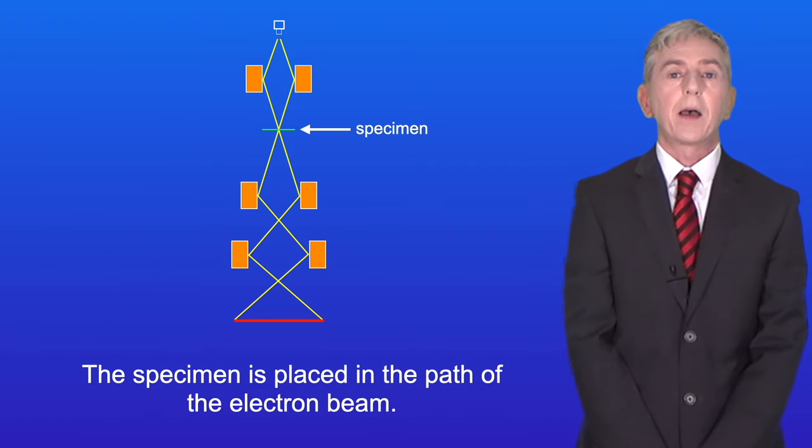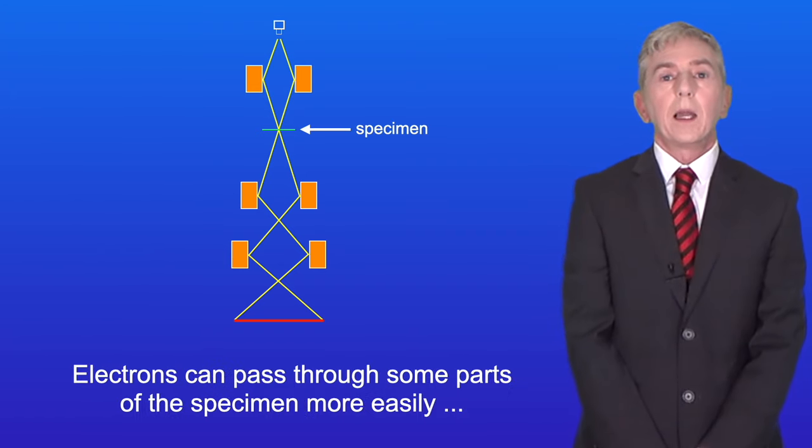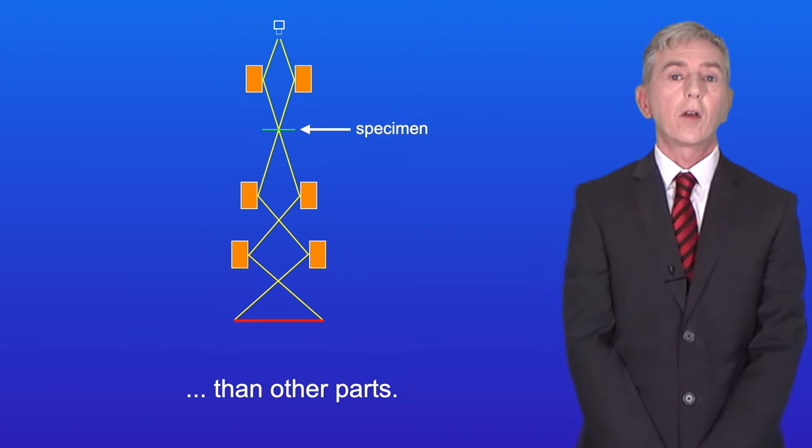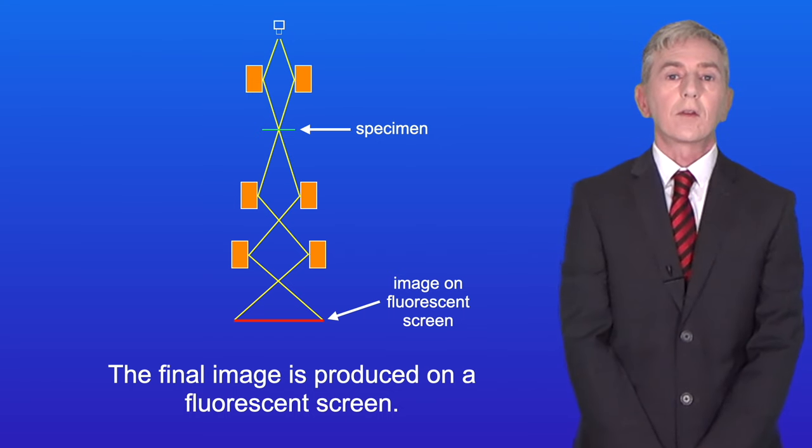The specimen is placed in the path of the electron beam. Electrons can pass through some parts of the specimen more easily than others, and the final image is produced on a fluorescent screen.